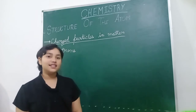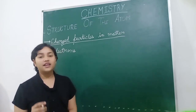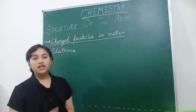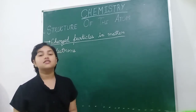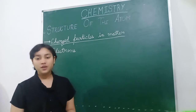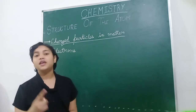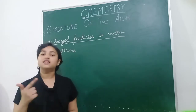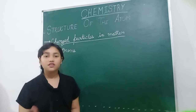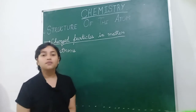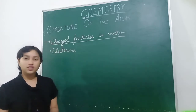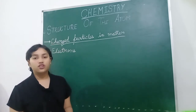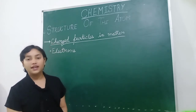You can also understand it by the first letter. Electrons — E — have negative charge. Protons — P means positive. And neutrons — N means neutral charge. So this is the subatomic structure of an atom.